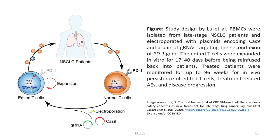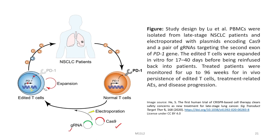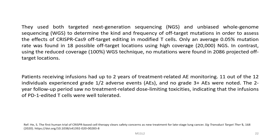This figure shows the study design by Lu et al, where PBMCs were isolated from NSCLC patients and electroporated with plasmid encoding the Cas9 gene and a pair of guide RNAs targeting the second exon of the PD-1 gene. The edited T cells were expanded in vitro for 17 to 40 days before being re-infused back into the patient. Treated patients were monitored for up to 96 weeks for in vivo persistence of edited T cells, treatment-related adverse events, and disease progression. Both targeted next-generation sequencing and unbiased whole-genome sequencing were used to determine the kind and frequency of off-target mutations.